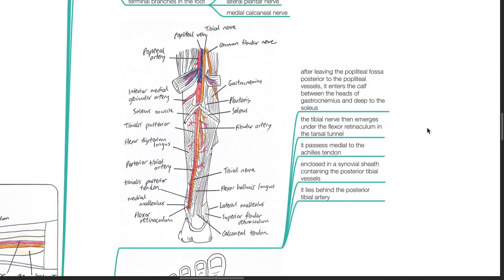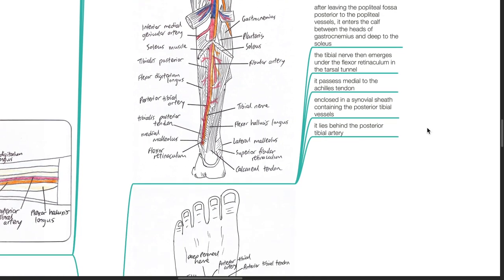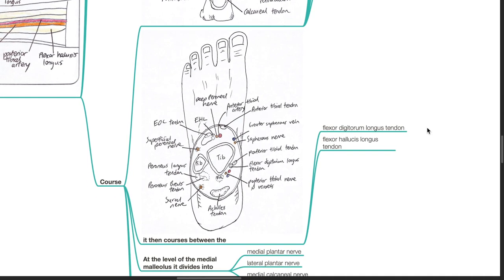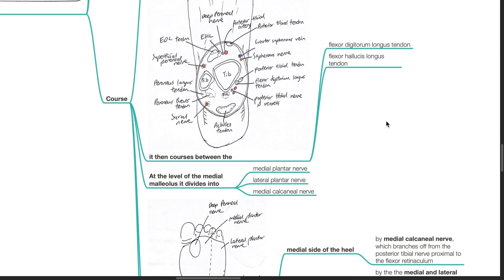Course: After leaving the popliteal fossa, posterior to the popliteal vessels, it enters the calf between the heads of the gastrocnemius and deep to the soleus. The tibial nerve then emerges under the flexor retinaculum in the tarsal tunnel. It passes medial to the Achilles tendon, enclosed in a synovial sheath containing the posterior tibial vessels. It lies behind the posterior tibial artery. It then courses between the flexor digitorum longus tendon and flexor hallucis longus tendon. At the level of the medial malleolus, it divides into the medial plantar nerve, lateral plantar nerve, and medial calcaneal nerve.